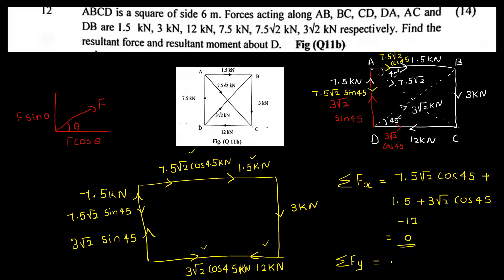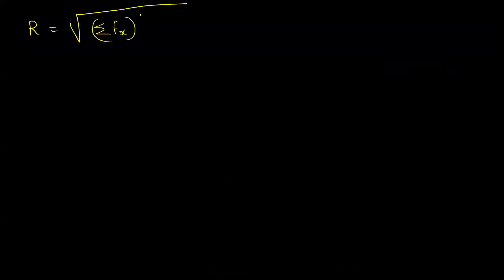For ΣFy: negative 7.5 minus 7.5√2 sin 45 plus 3√2 sin 45 minus 3 equals zero. So ΣFy is also equal to zero. Therefore, the resultant force equals √(ΣFx² + ΣFy²) = √(0² + 0²) = 0.